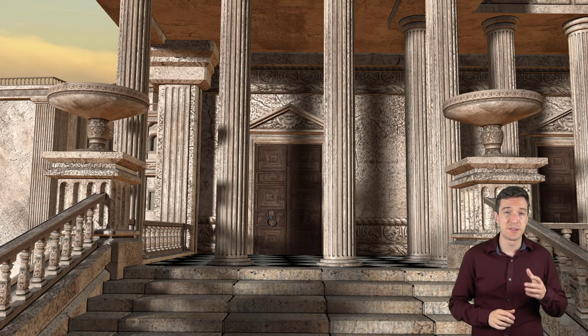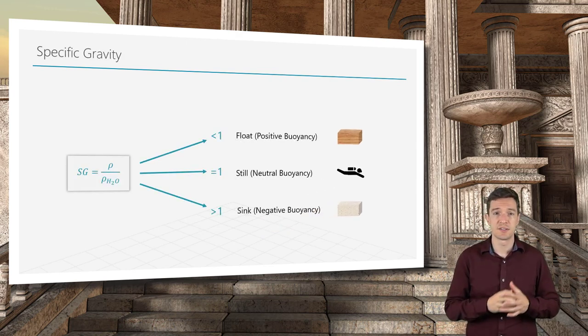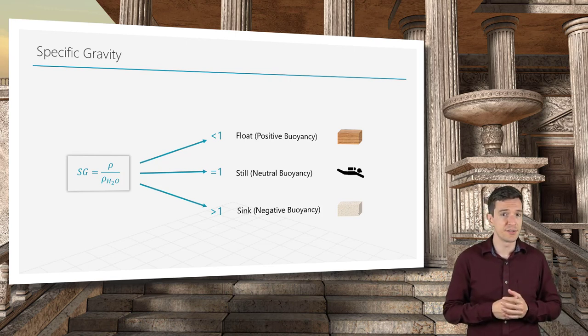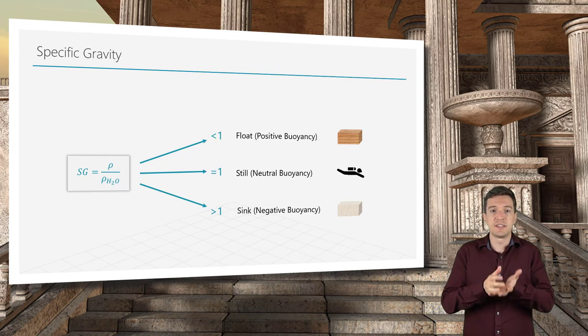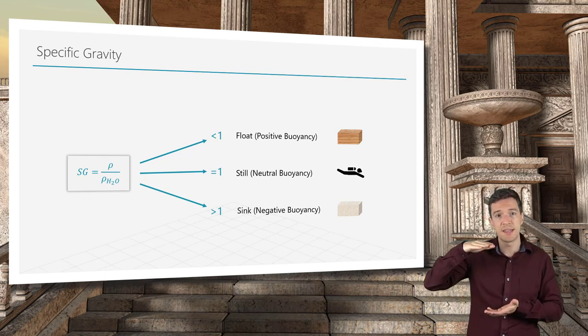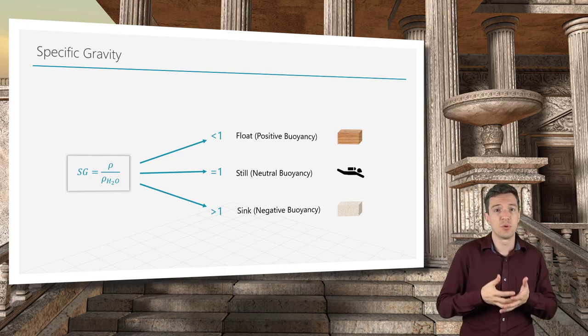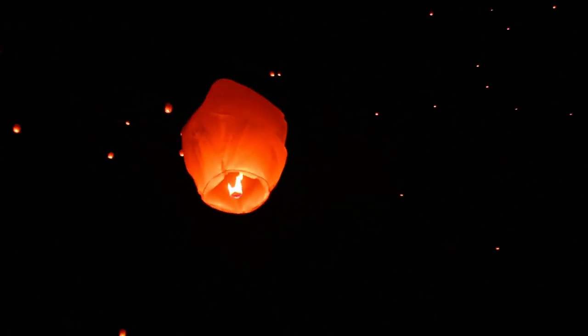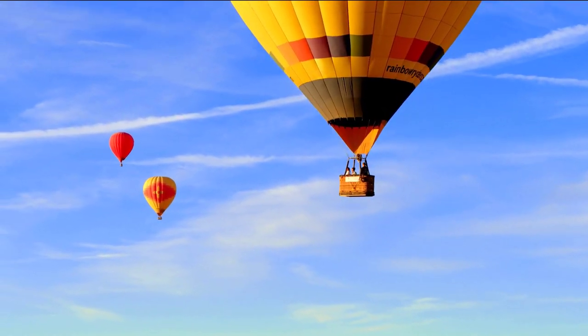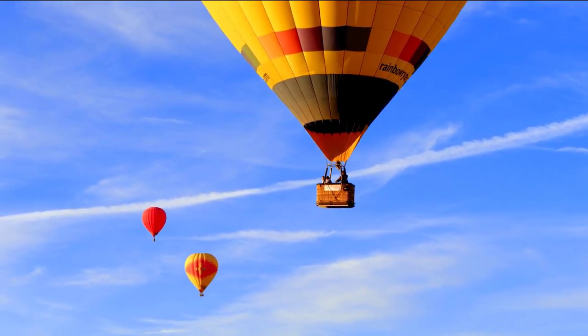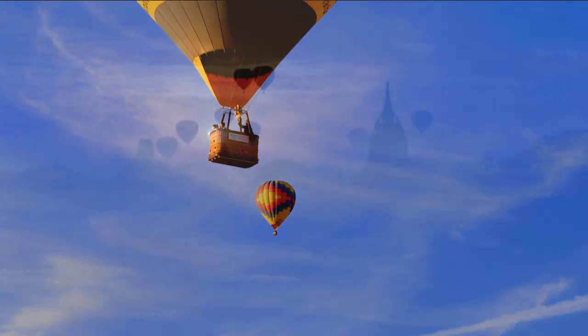We can also analyze buoyancy from a different point of view, introducing the concept of specific gravity. Specific gravity is the ratio of density of a substance over the density of water at 4 Celsius degrees. When this ratio is less than 1, we have positive buoyancy and the body will float. If it is equal to 1, we have neutral buoyancy and the body will stay in its original position. While, if the specific gravity is larger than 1, the body will sink due to negative buoyancy. Buoyancy is the reason why balloons, lanterns, and blimps fly in the sky. This is because the air or the gas inside them is less dense than the surrounding air, and this causes a pressure force on these bodies to create a positive buoyancy and make them float.